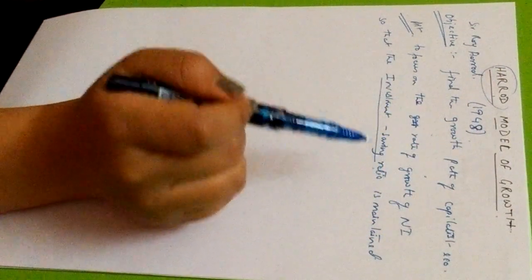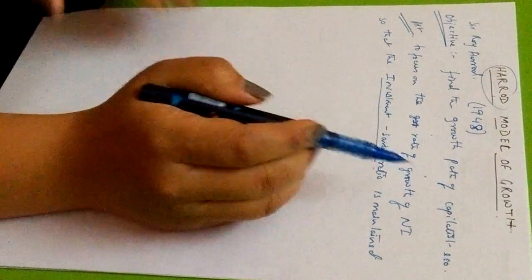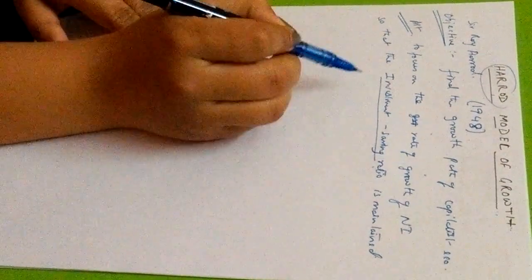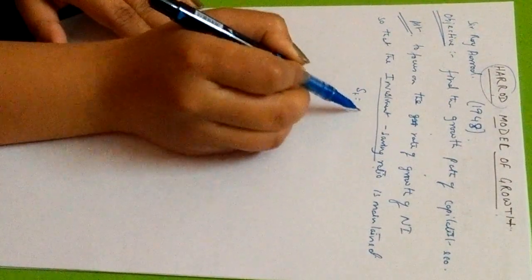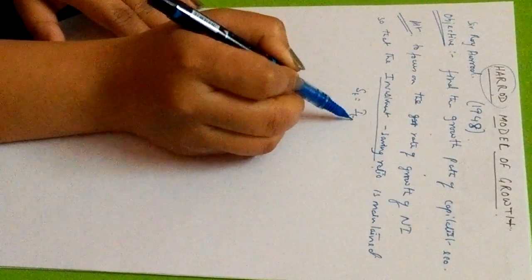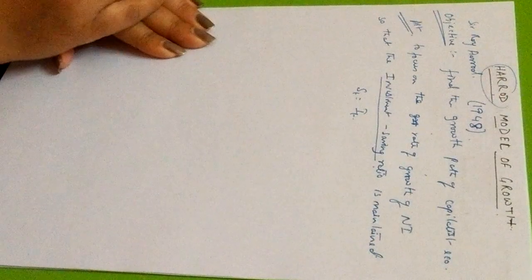Alternatively, we can say the objective is to focus on the rate of growth of national income such that the investment-saving ratio is maintained. This investment-saving ratio was the equality condition under the simple Keynesian model. This is how the Harrod model has already used the Keynesian equilibrium situation in order to explain his model.